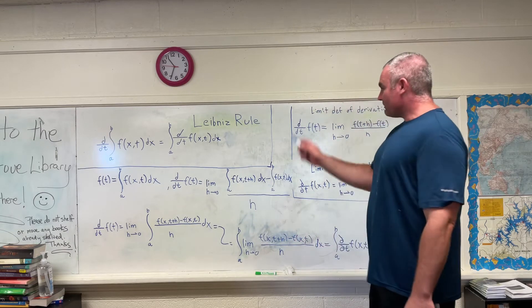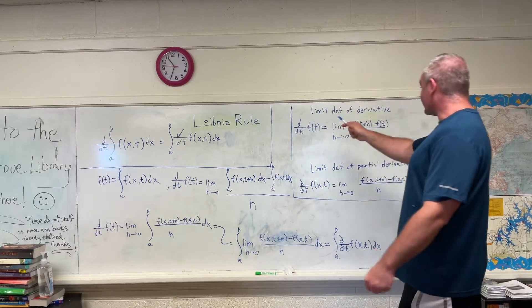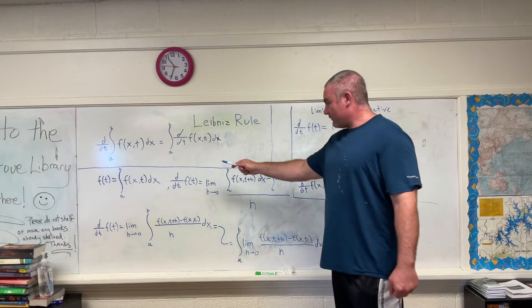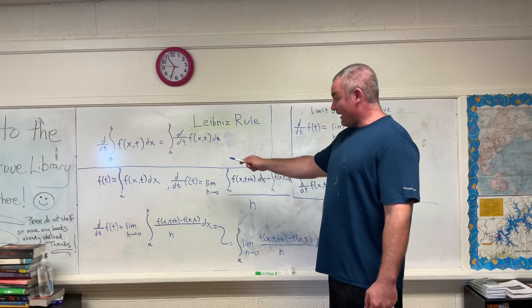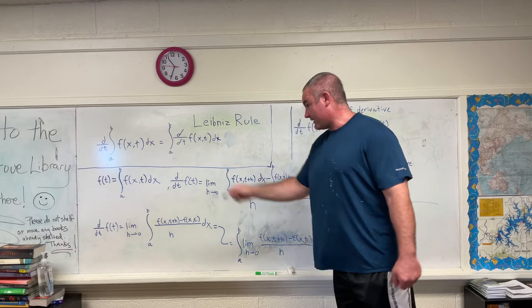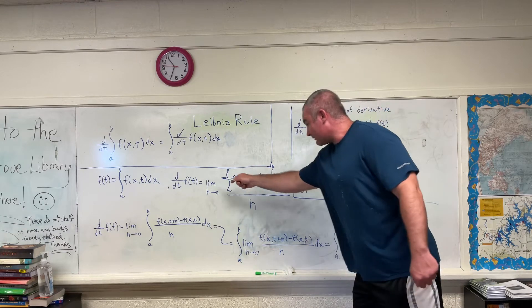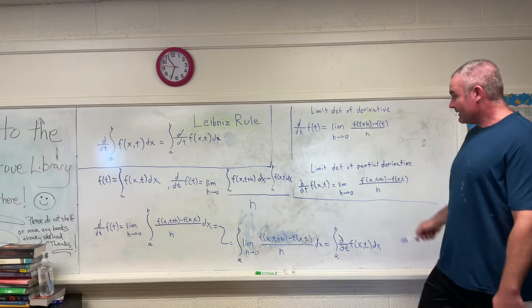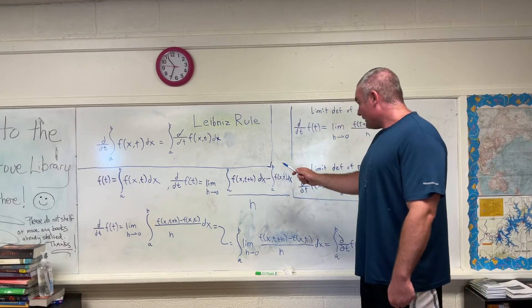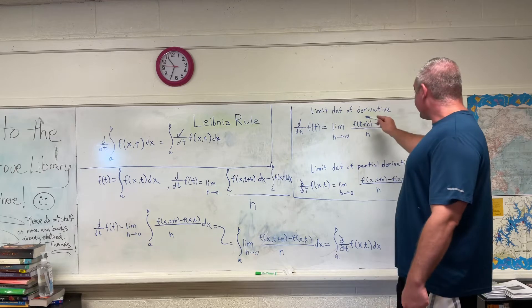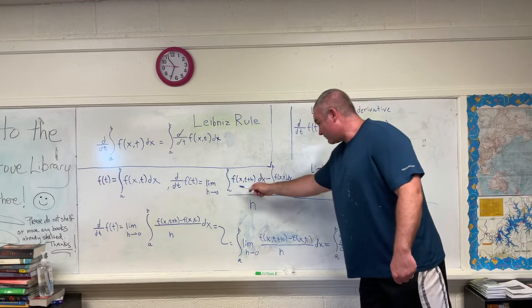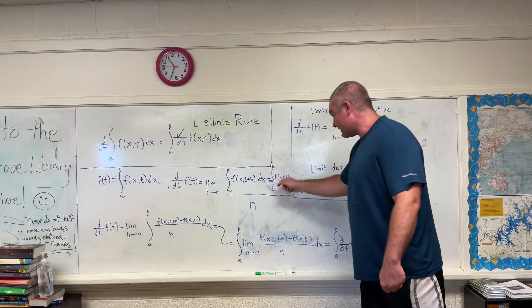So what we're going to do is plug that function of t into our limit definition of a derivative. So the derivative with respect to t of that function of t, which is that thing right there, is equal to the limit as h approaches zero of f of t plus h. That's this part right here, you should be able to see why this is our f of t plus h.